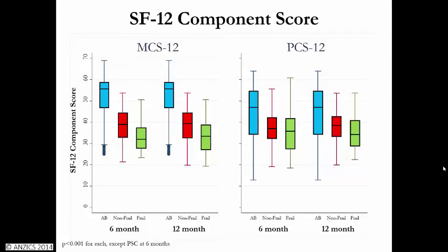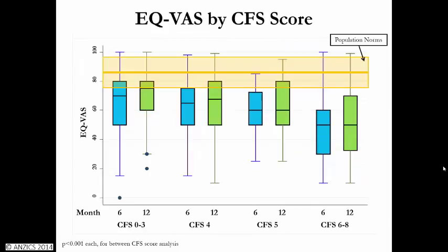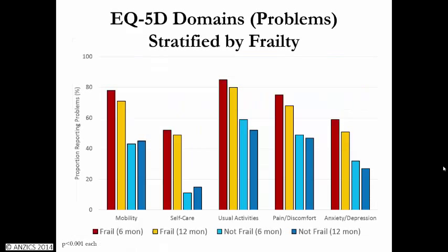Looking at the EQ visual analog scale stratified by Clinical Frailty Scale score, patients scoring 1 to 3 — otherwise healthy — had EQ visual analog scores at 6 and 12 months following survival from critical illness approximately equivalent to the normal population. With increasing degree of frailty — scores 4 to 5 and 6 to 8 — EQ visual analog scale scores get progressively lower. The more frail you were, the more you reported your health-related quality of life to be poor at 6 and 12 months.